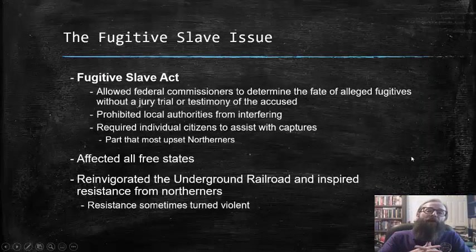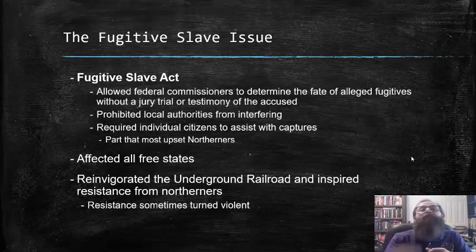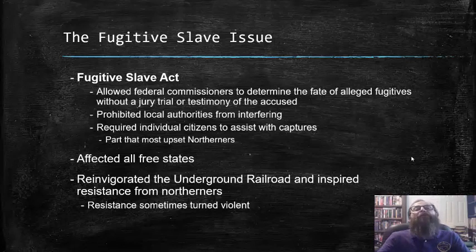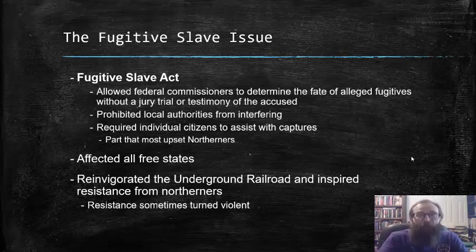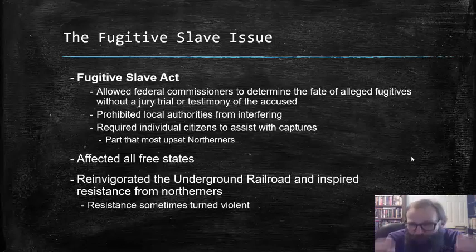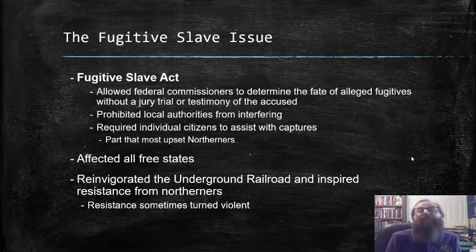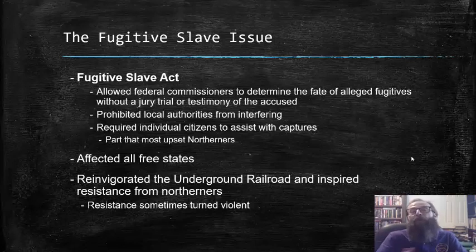One clause of the Compromise of 1850 that only served to fuel tensions even more was the fugitive slave issue. The Fugitive Slave Act allowed federal commissioners to determine the fate of alleged fugitive slaves without a jury trial or even testimony from the accused themselves. It prohibited local authorities and local governments from interfering with the federal government's prosecution of the Fugitive Slave Act. And, most crucially to northerners, it required individual citizens to assist with captures, and actually made it illegal for northerners to refuse — or face potential prosecution themselves.